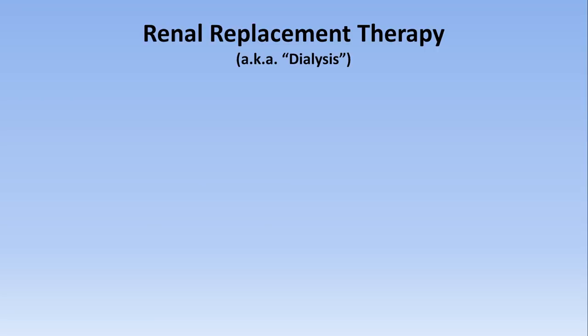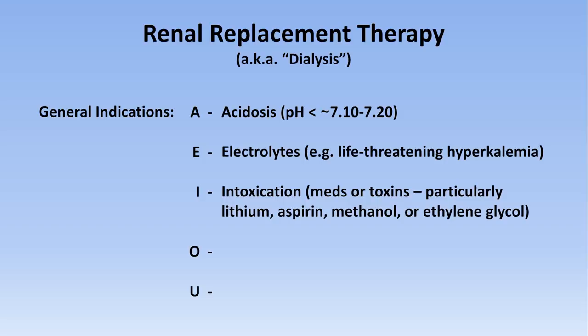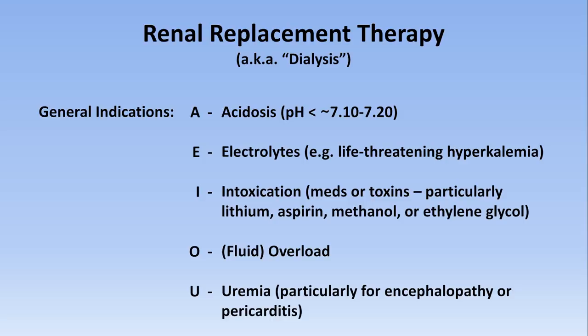The final topic is renal replacement therapy, colloquially referred to as dialysis. There are five general indications for starting emergent dialysis, remembered with the mnemonic AEIOU: A for acidosis, typically once pH drops below 7.10 to 7.20 though there is no specific cutoff; E for electrolytes, most specifically life-threatening hyperkalemia; I for intoxication, referring to medication toxicity or toxic ingestion — including lithium, aspirin, methanol, and ethylene glycol; O for overload or fluid overload; and U for uremia, particularly for patients with uremic encephalopathy or pericarditis.